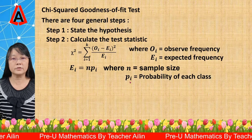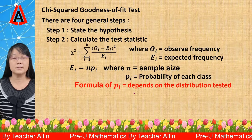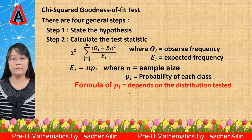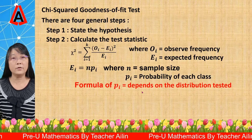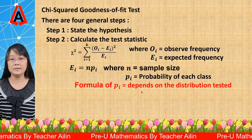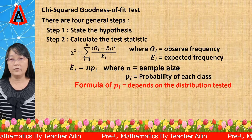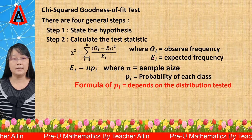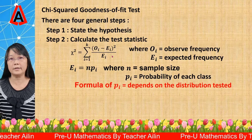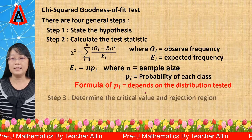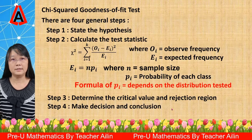The formula used to calculate the probability depends on the distribution we are going to test. If we want to test binomial distribution, then we use the binomial distribution probability formula. If we want to test Poisson, then we use the Poisson probability, and so on. Generally, first we calculate the probability of each class, then the expected frequency, then we combine the observed and expected frequencies using the formula to calculate the test statistic Chi-squared. Step 3 is to determine the critical value and rejection region. Step 4 is to make the decision and conclusion.